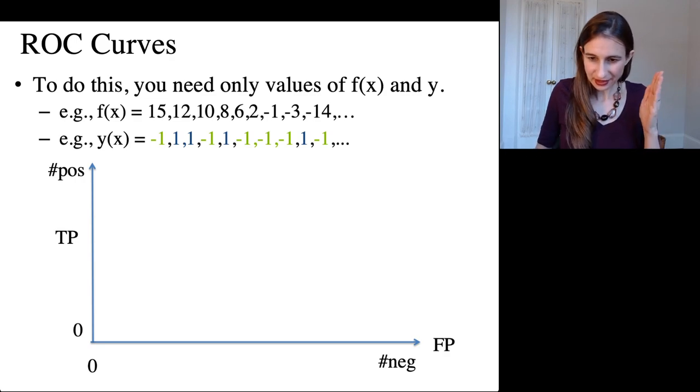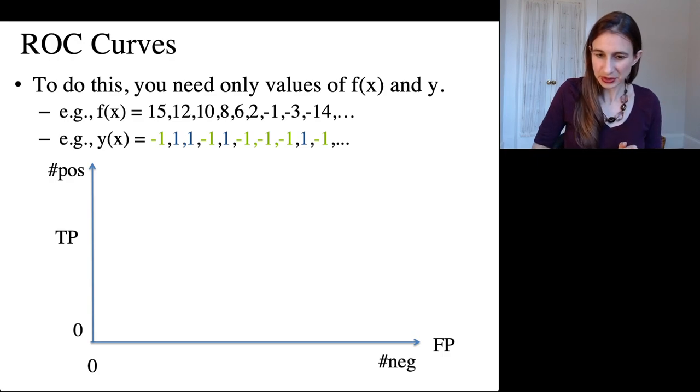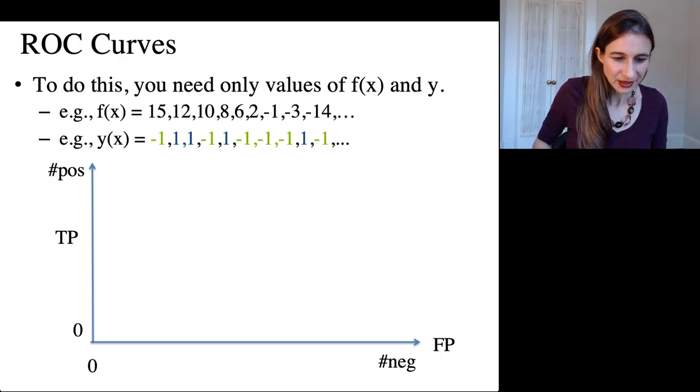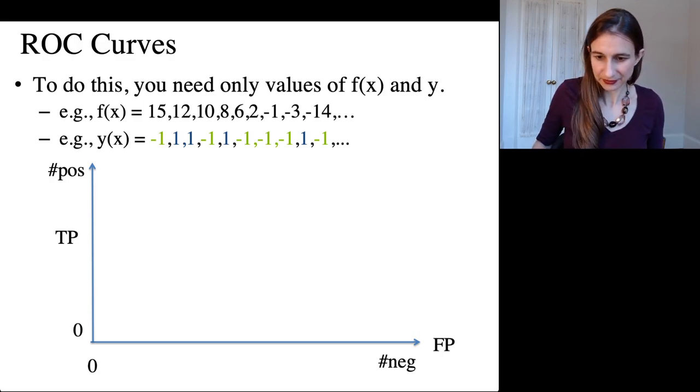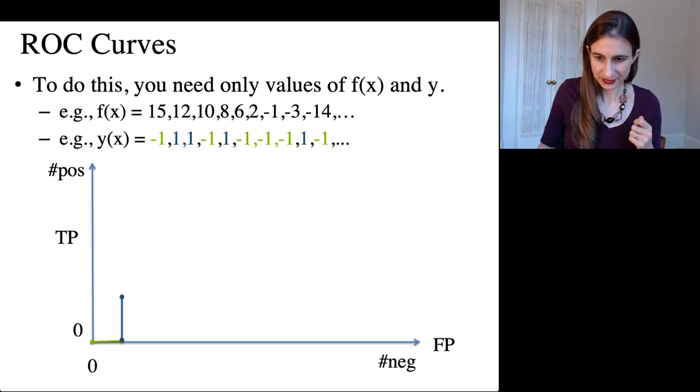So as I start, I have zero positives and zero negatives because my classifier is all the way on the extreme. So then I'll move it over one rung and what I encounter is a negative. So I'm going to go over to the right. Then I find positive. So great.